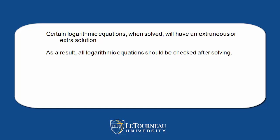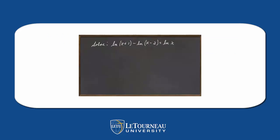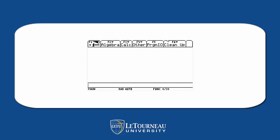Now we have to be careful — certain logarithmic equations when solved will have an extraneous or extra solution. As a result, all logarithmic equations should be checked after solving. Let's try one here: natural log of (x+1) minus the natural log of (x−2) equals log of x. Using all of our formulas, we get x plus 1 equals x squared minus 2x. Drawing it all together and making it equal to 0, let's go to the calculator and solve that quadratic equation, because it looks like it's not going to factor very well.